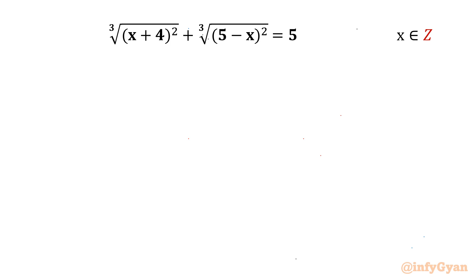Welcome back to InfiGyan friends. In today's video we have one very interesting question from Radical Equations. It is cube root of (x+4) whole squared plus cube root of (5-x) whole squared equal to 5. And we have to find out integer solutions only.